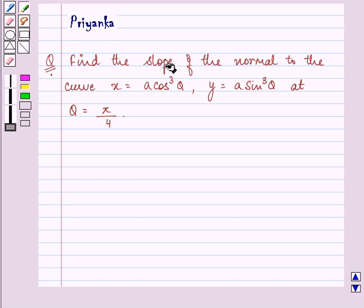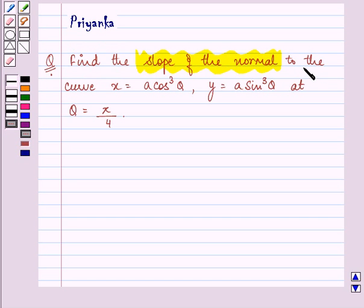It says, find the slope of the normal to the curve x equals a cos cube theta, y equals a sin cube theta at theta equals pi by 4.